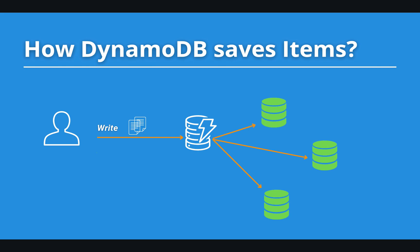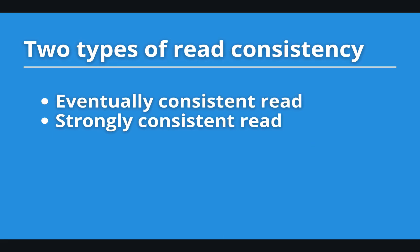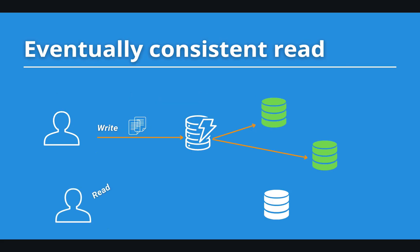This feature comes with a cost — time — because it takes time to save items in three places. This is crucial to keep in mind when thinking about reading from DynamoDB. There are two types of reads possible: eventual consistent read and strong consistent read.